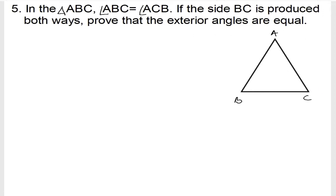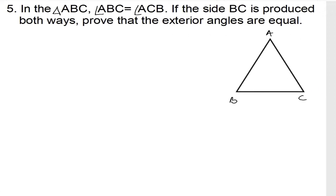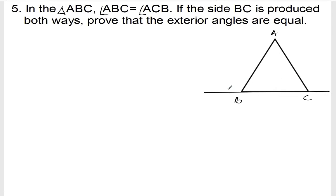So side BC is produced both ways. BC is produced on both sides. The question says BC is produced both ways — let's say this point is D and this point is E.